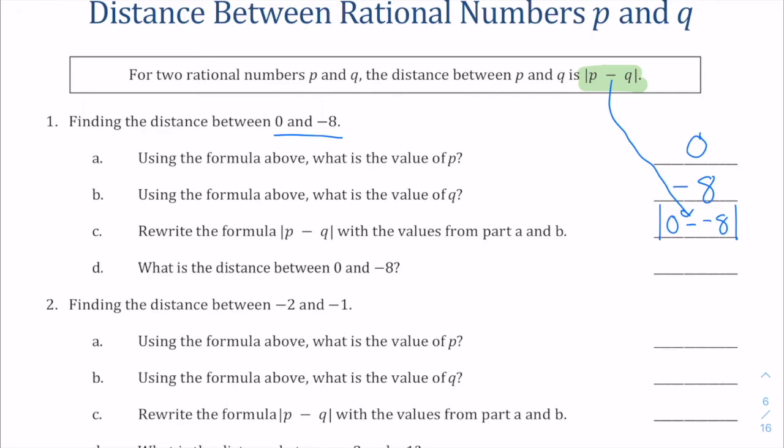So if we were to actually evaluate that, we could recognize that those two minuses are really going to be like a plus. So we get zero plus eight, which is eight, and the absolute value of that is eight. So that's the distance between zero and negative eight.